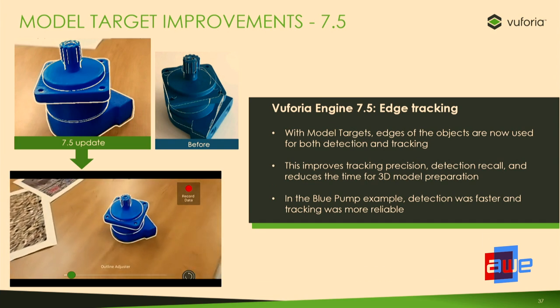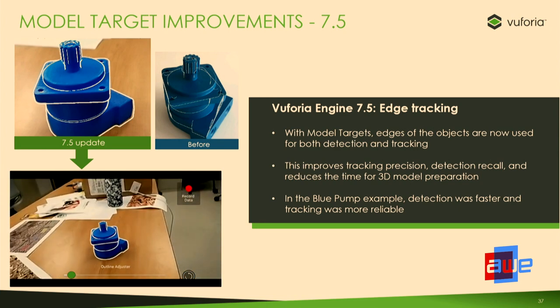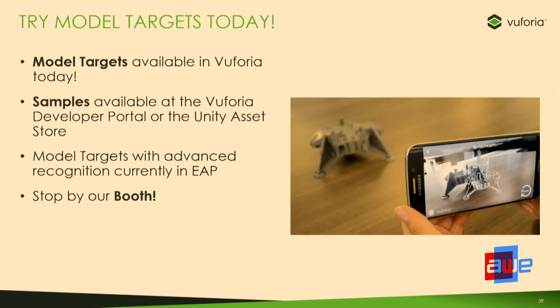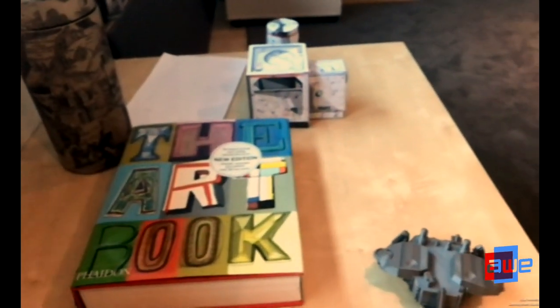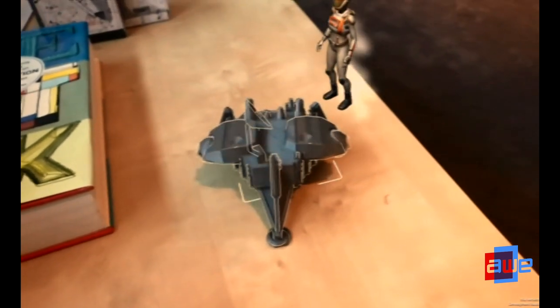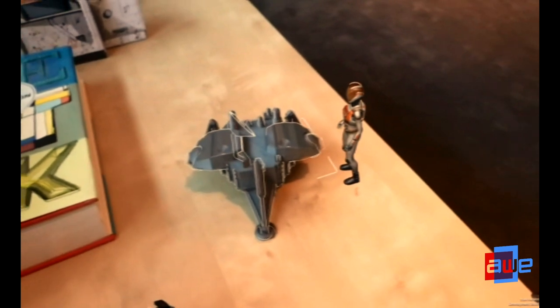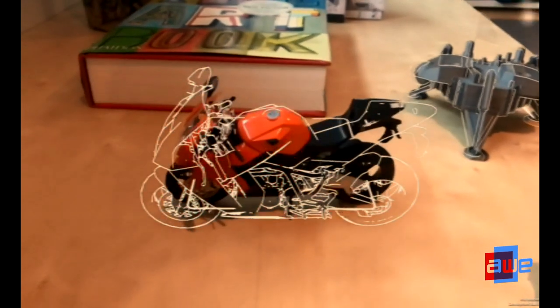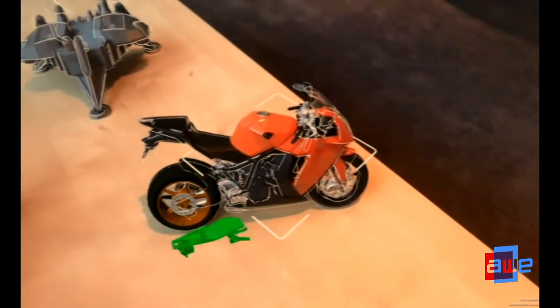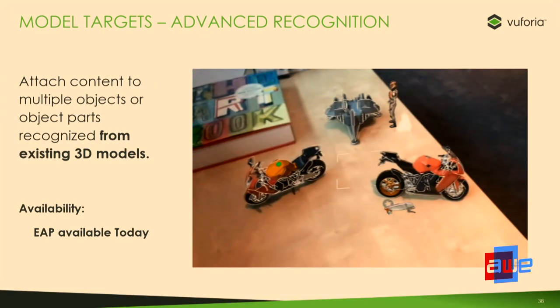We're always improving our model target technology. We just released version 7.5 a couple of weeks ago, and with that we introduced edge tracking, making tracking even more robust so we can work on even more objects. A little further out — probably our next release — we are working on the next generation of model targets, where we can detect multiple models from multiple angles. In this demo, there's no guide view initially; once it sees the object, it shows the guide view for that particular angle. The time between when the guide view appears and when augmentation happens is really fast — the goal is for you to look at an object and have it augment right away.